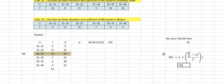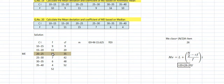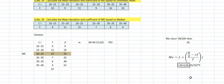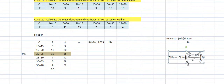Here L = 20, N/2 = 26, preceding CF = 20, simple frequency of the median class = 15, and class width i = 5. Substituting: Median = 20 + [(26 – 20) / 15] × 5 = 22. So the median is 22.